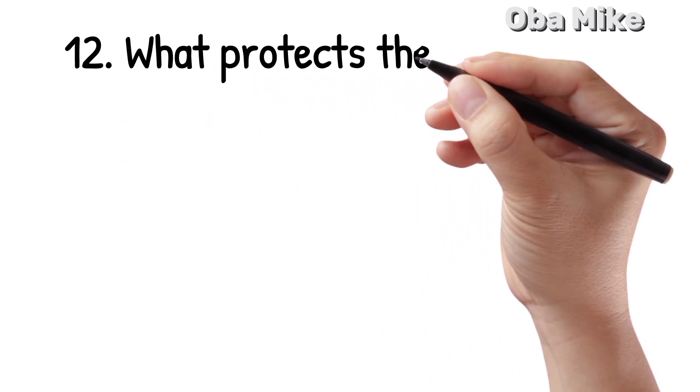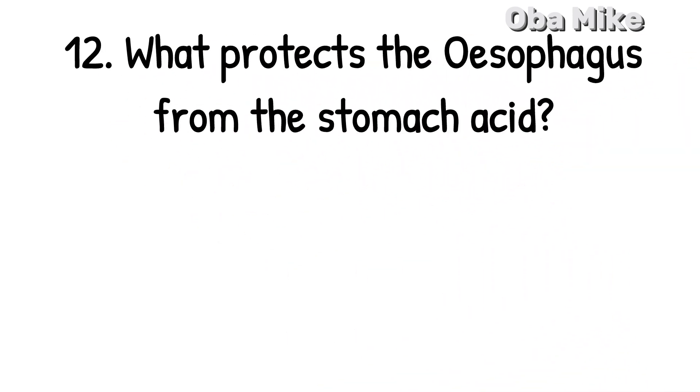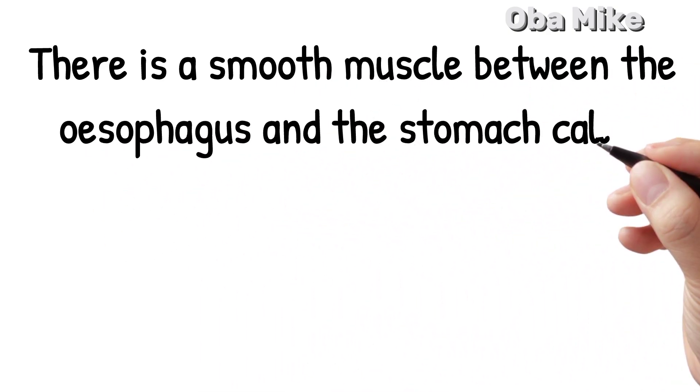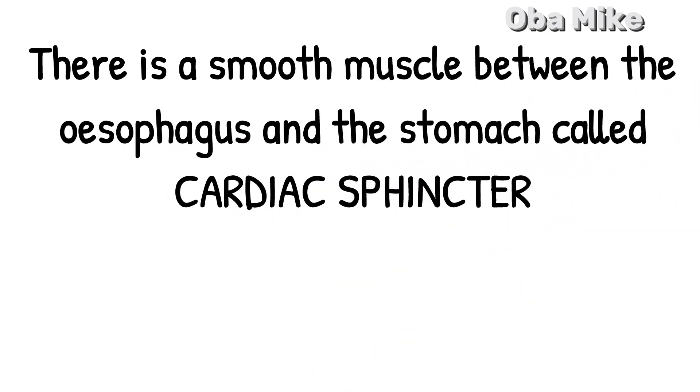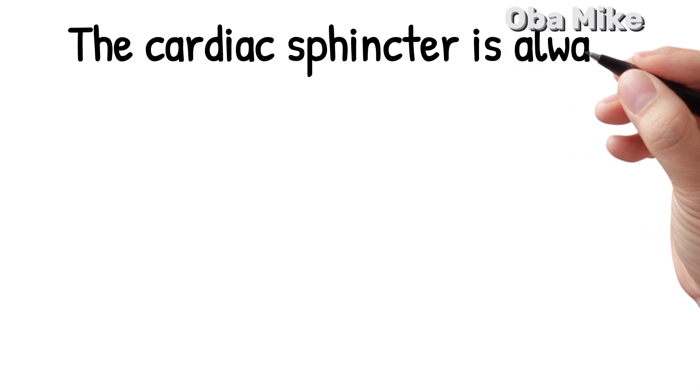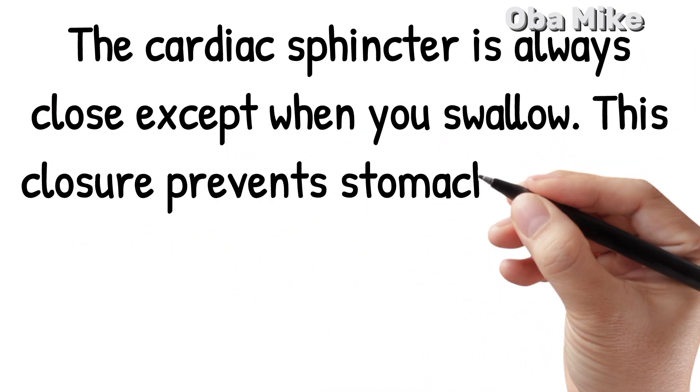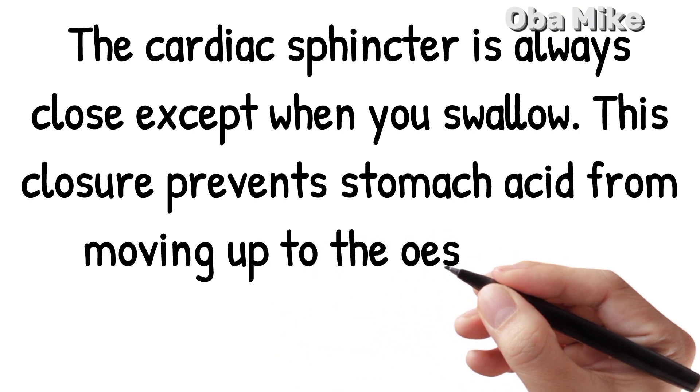Number 12. What protects the esophagus from the stomach acid? There's a smooth muscle between the esophagus and the stomach called the cardiac sphincter. The cardiac sphincter is always closed except when you swallow. This closure prevents stomach acid from moving up to the esophagus.